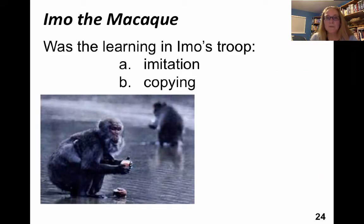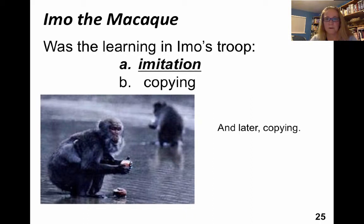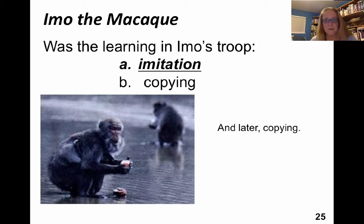In Emo's troop, was that imitation or copying? When Emo initially discovered the behavior of dropping rice into water so the rice would float and the sand would sink to the bottom, the other animals would have been imitating — because it would have been a new spatial manipulation that they had never done before. But later on, when she was simply washing sweet potato, then maybe we actually had copying.